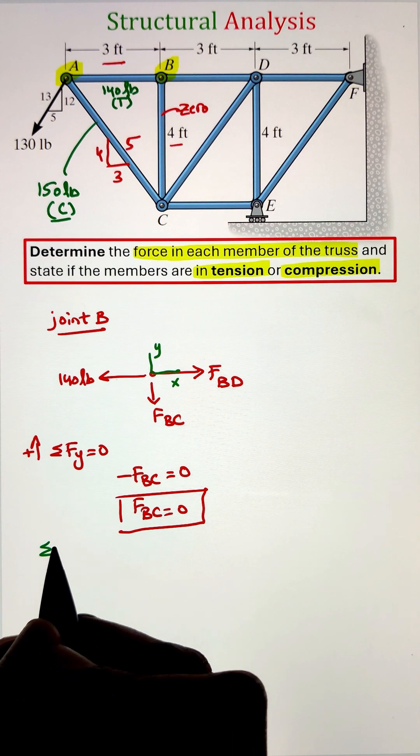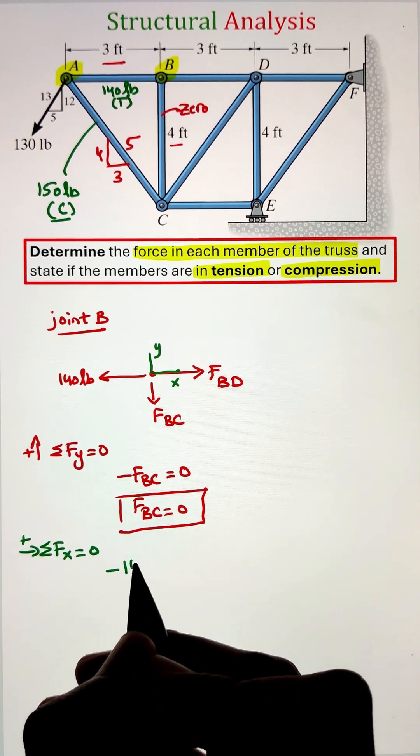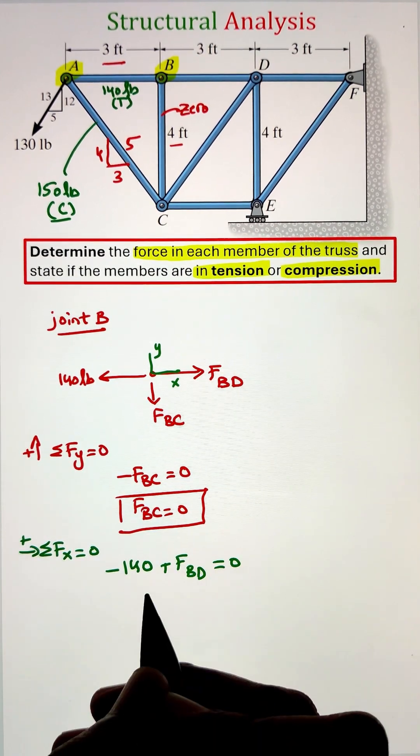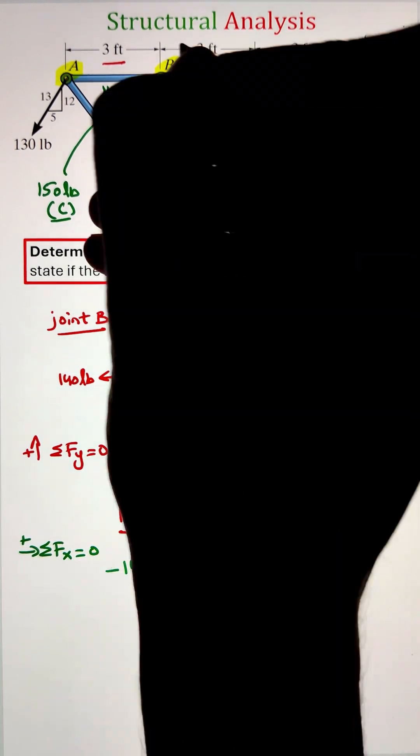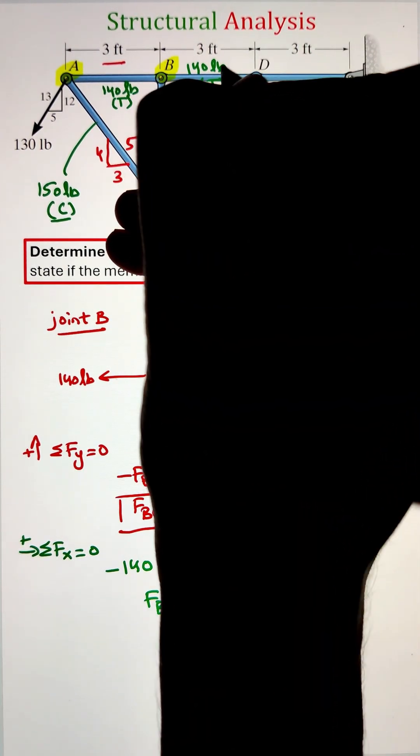By doing summation of forces along the y-axis, we can see that the force FBC equals zero, whereas summation of forces along the x direction gives the force in member BD as 140 pounds in tension.